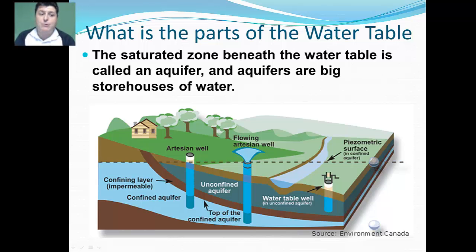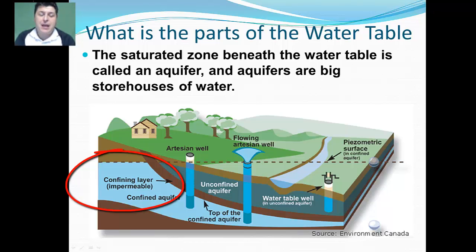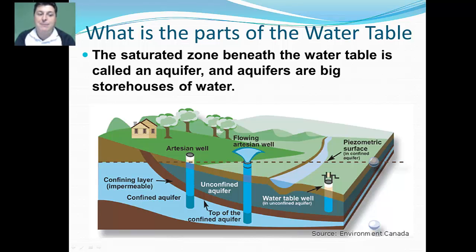Some aquifers, as water flows underground, encounter really dense clay that's impermeable, which we call a confining layer. That impermeable layer is called an aquitard. Water that is unable to move because it's confined in that space is going to be called a confined aquifer.